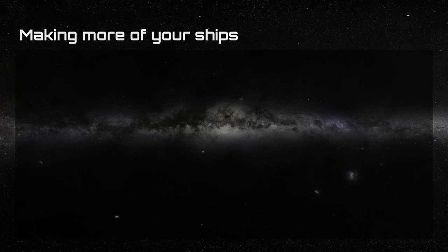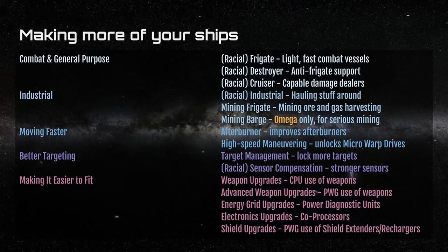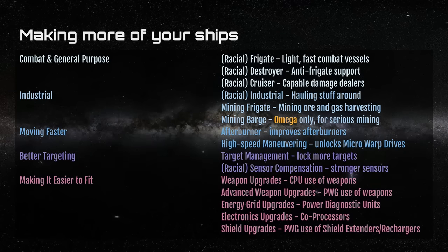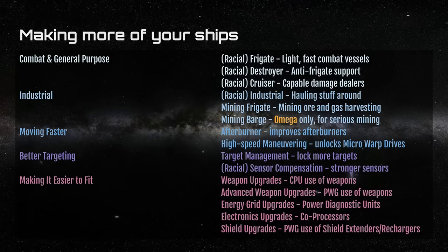To make more of your ships, you'll want to train some of these skills. The first are combat and general purpose skills, focusing on racial Frigate, Destroyer, and Cruiser class ships available to Alpha Clones. These are your first ships — light fast combat vessels, anti-frigate support, and the big damage dealers you'll take out on fleet or use for gate camping. Industrials are used by industrial characters to haul things around, whether it's manufactured goods taken to market or loot gathered from killing NPCs.